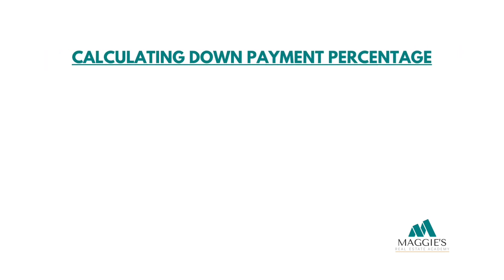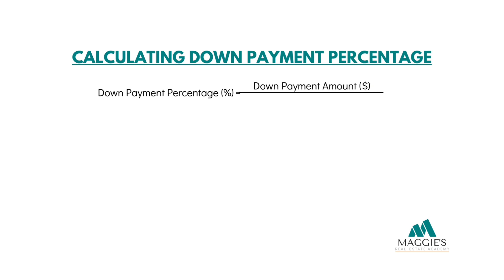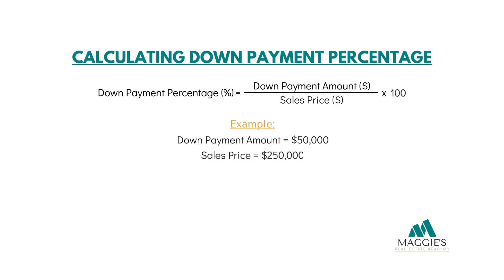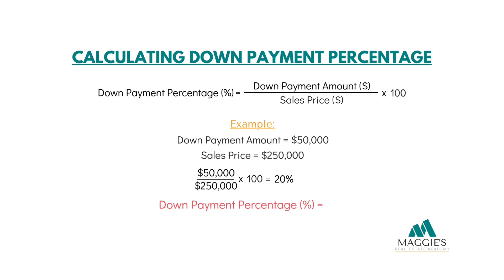To calculate the down payment percentage when given the down payment amount and the sales price, divide the down payment amount by the sales price and then multiply by 100 to get it into a percentage. For example, if the down payment amount is $50,000 and the sales price is $250,000, the calculation would be $50,000 divided by $250,000, then multiply by 100, which equals 20%. Therefore, the down payment percentage for this case would be 20%. Understanding these concepts and knowing how to calculate the down payment, sales price, and down payment percentage is essential for aspiring real estate professionals. It allows them to navigate down payment scenarios and tackle related questions with confidence.